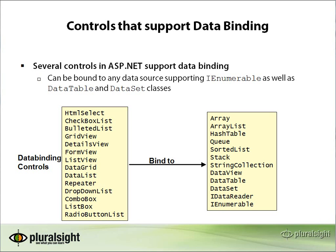Binding data to controls doesn't have to be as complex as retrieving from a database and binding to a complex grid. It can be something very straightforward, like taking an array of strings and binding it to a ListBox. Controls in ASP.NET that support data binding: generally, if a control supports collections of items when it displays, it will inevitably support data binding. You can use your intuition to figure this out.